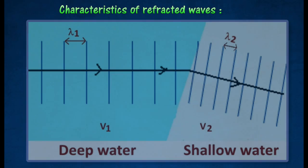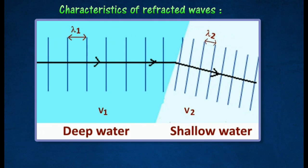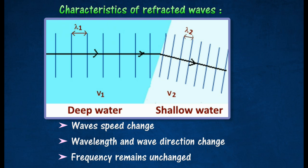Consider plain water waves traveling from the deep region to the shallow region. Waves change in speed as they enter different medium. In the shallow region, their wave fronts become closer. This causes the direction of propagation of water waves to change. The frequency of water waves remains constant.